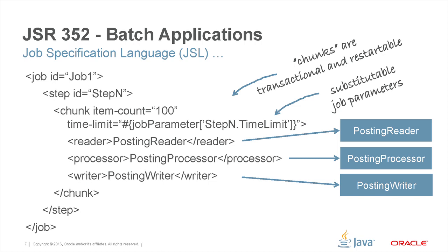Continuing our look at JSL, here's an example job shown. It's a simple job consisting of one step, using the chunk pattern which incorporates a reader, processor, and writer. You can see in the JSL that it describes which reader, which processor, and which writer implementations to use. You also see an example of substitution through job parameters, which can be passed in when the job is started so that you can run the job differently, tailored to your specific needs on each start. Additionally, chunks are transactional and restartable.